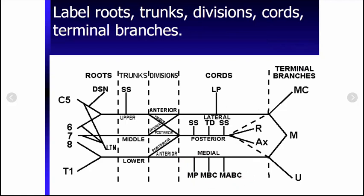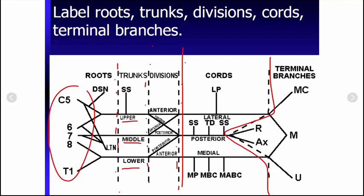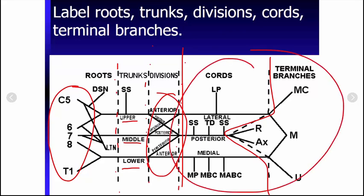Then we can put in our labels for roots, trunks, divisions, cords, and terminal branches. Now we have it all together. We have our upper, middle, and lower trunks. We have roots C5 through T1. We have our anterior and posterior divisions. We have our cords, most important, and our terminal branches.